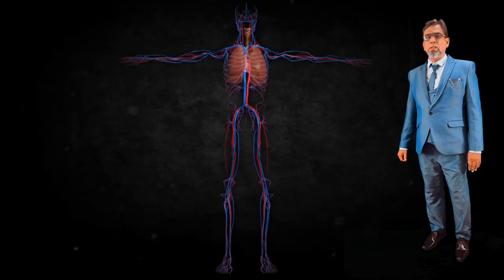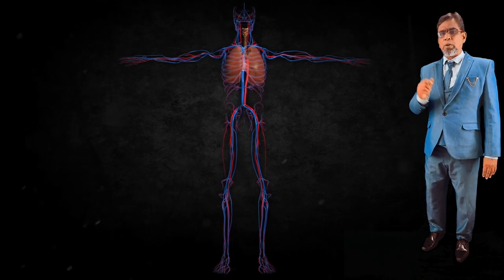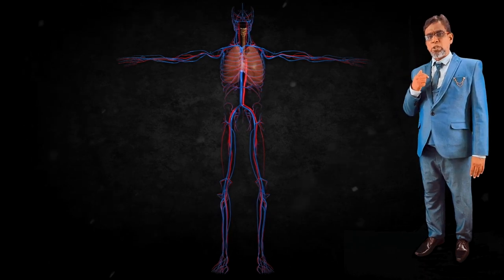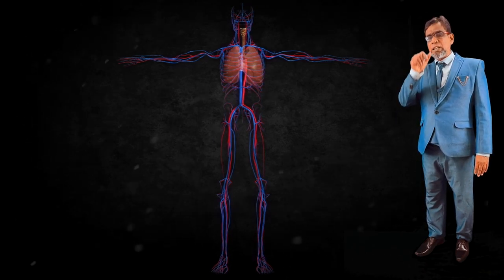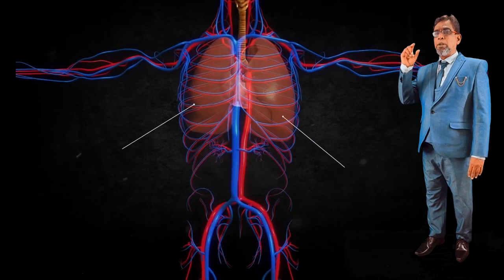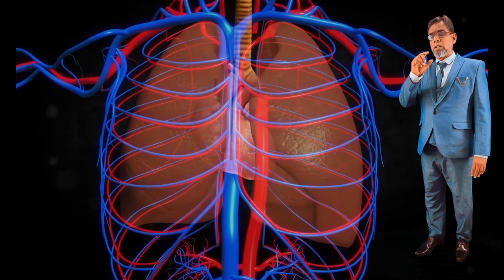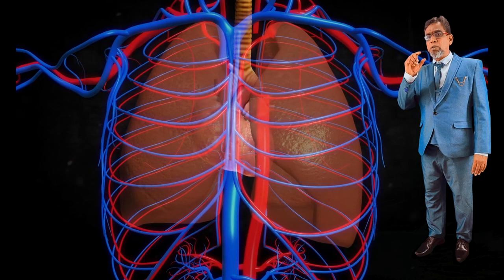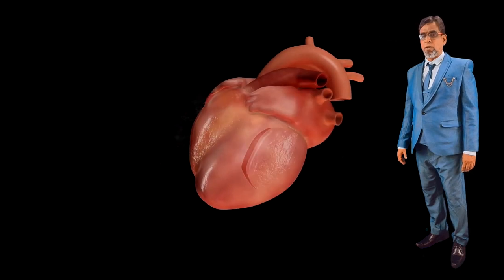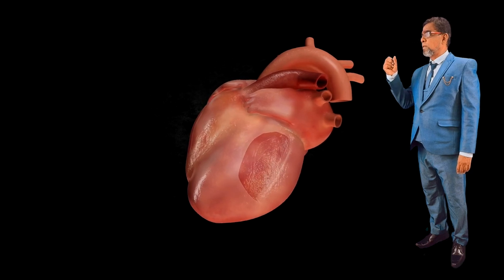The heart is a vital organ which pumps the blood continuously to all parts of the body. It is located in the center of the chest, in the thoracic cavity between the two lungs. It is slightly tilted towards the left. It weighs about 300 grams in an adult, and the size of the heart is roughly close to a fist.